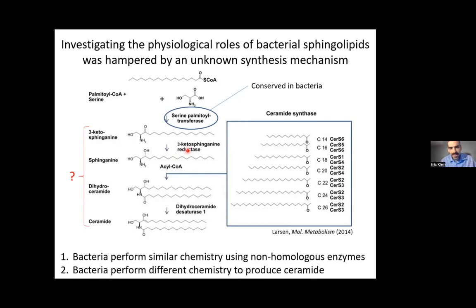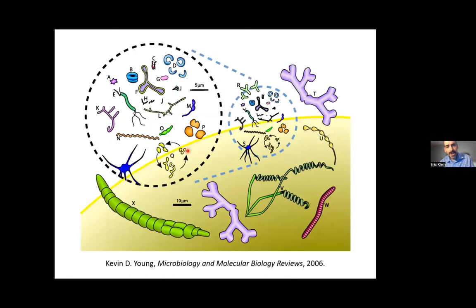In order to explain how we studied this, I have to take a step back and explain where this whole project came from, because I was not - and still would say I'm not - really a lipid biologist, although I'm learning a lot as we go. My lab is really interested in bacterial cell shape. Bacteria come in every conceivable shape and size, and shape is really important for their function. Our model organism is Caulobacter crescentus.